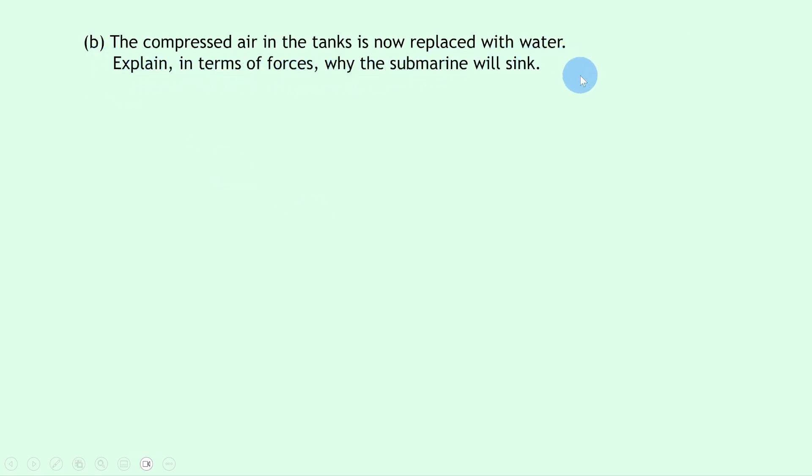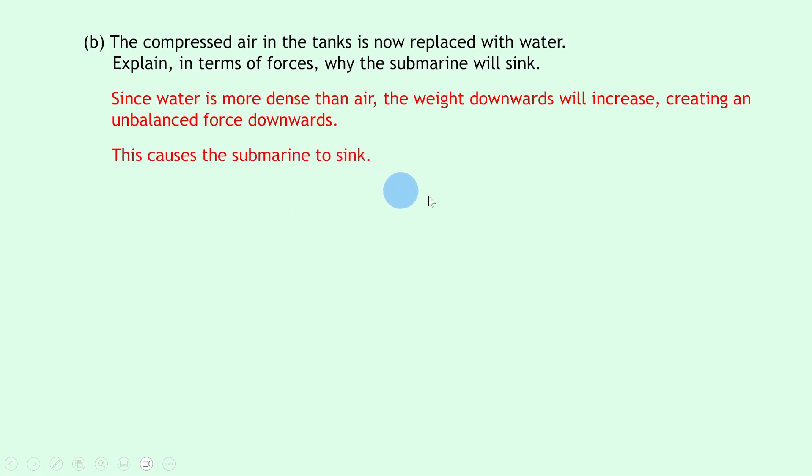Part B says the compressed air in the tanks is now replaced with water. Explain in terms of forces why the submarine will sink. Well, we can say that since water is more dense than air, the weight downwards will increase, creating an unbalanced force downwards. This causes the submarine to sink.